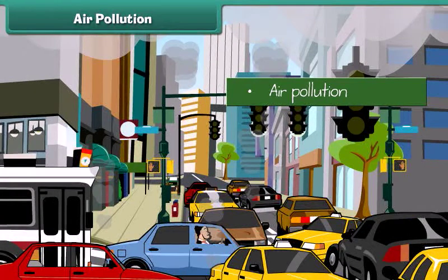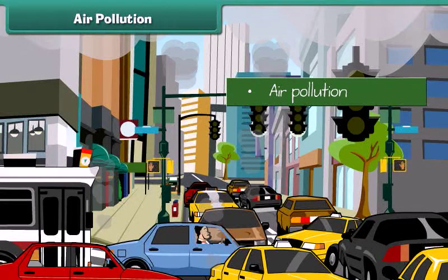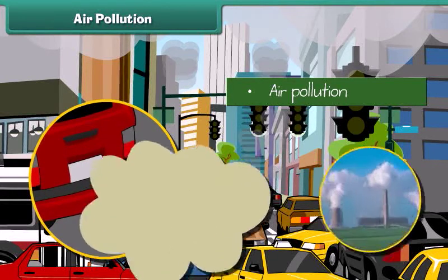Air gets polluted when unwanted substances — air pollutants — enter into it. But the question is, how do these substances enter into the air? These substances, air pollutants, come due to burning of fuels and emission of poisonous gases from industries.